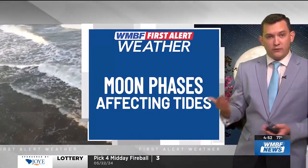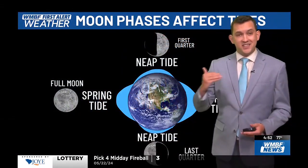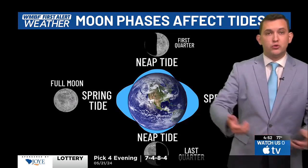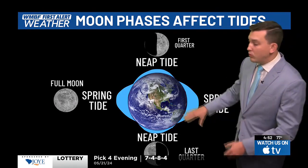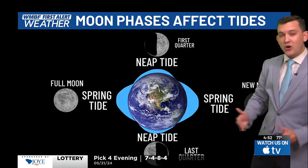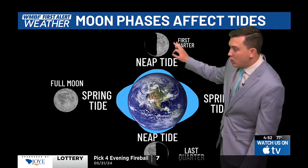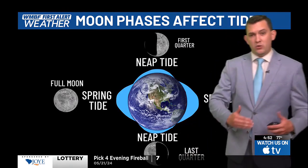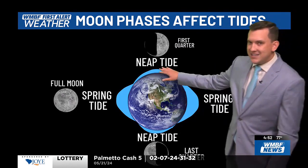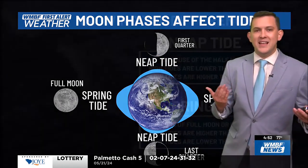With a full moon or a new moon, the sun is aligned with Earth and the moon, which gives a stronger gravitational pull. When that happens, it brings higher than normal high tides — we call these spring tides. While during a first quarter moon or a last quarter moon, there's less gravitational pull from the moon, meaning the high tides aren't that high — it's actually lower than normal. We call those neap tides.